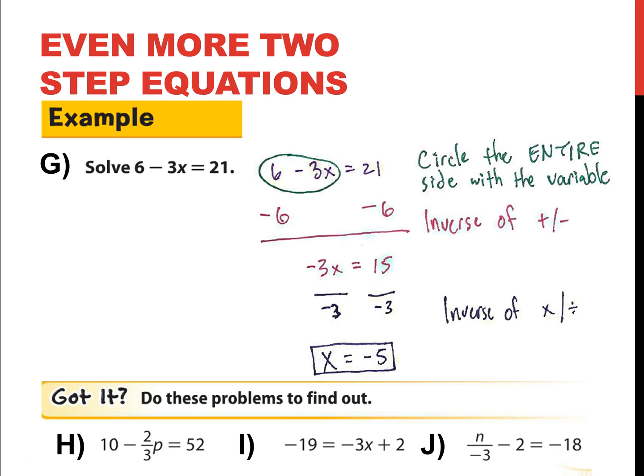So I've got three examples for you to work out on your own. H, I, and J. H is 10 minus 2 over 3 times p equals 52, or 10 minus 2 thirds times p equals 52. Example I is negative 19 is equal to negative 3x plus 2, or negative 19 equals negative 3 times x plus 2. The final example on this one is J, which is N divided by negative 3 minus 2 equals 18, or N over negative 3 minus 2 equals 18. Awesome. So go ahead and pause the video. Do these H, I, J just like I did G. I'll be here when you get back.